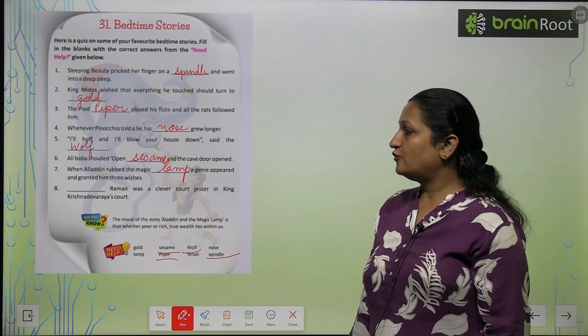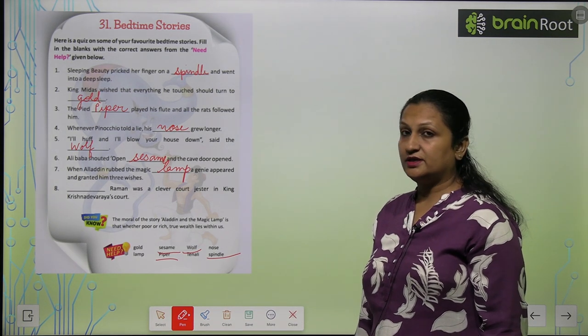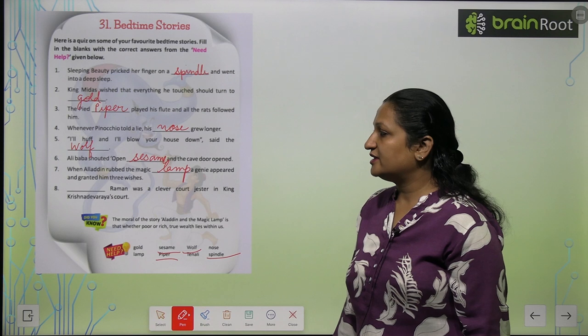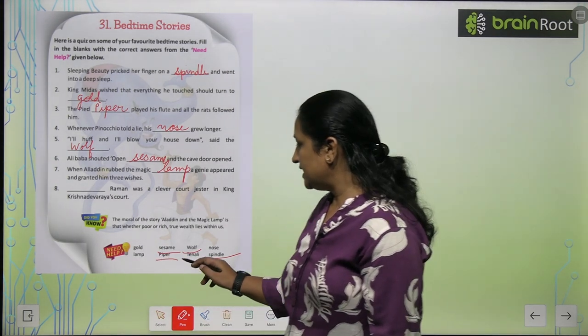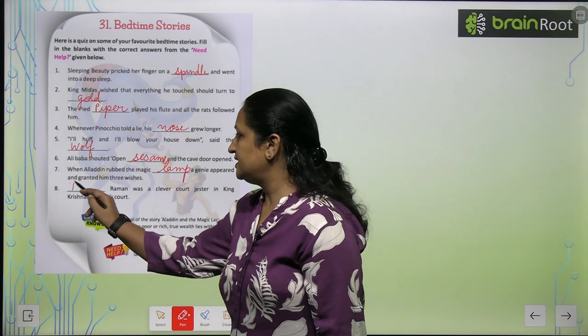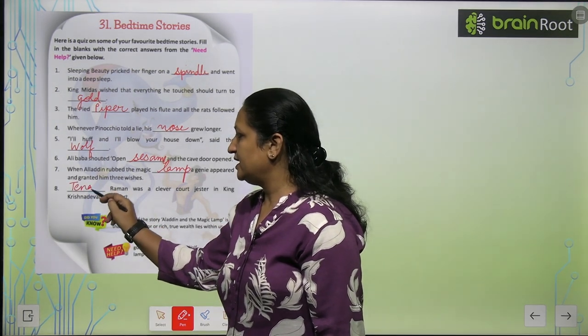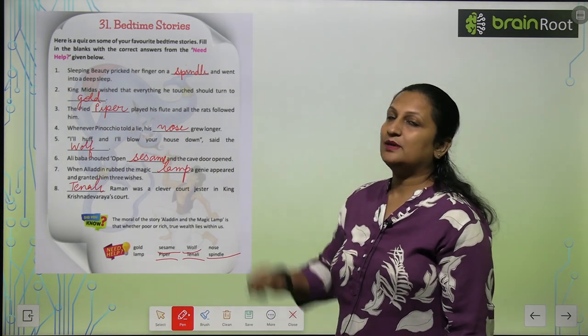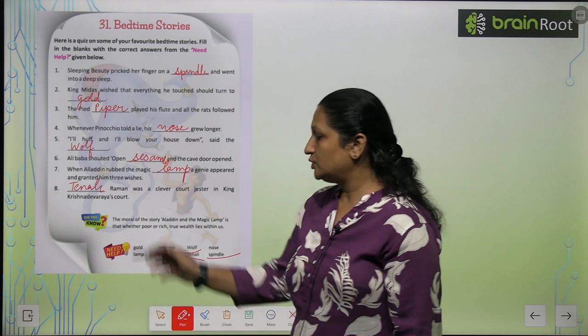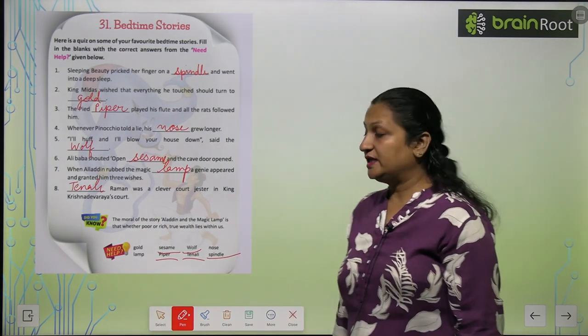Dash Raman was a clever court jester in King Krishnadeva Raja's court. Toh kaun the wo? Wo the Tenali Raman, T-E-N-A-L-I, Tenali Raman. Like this, you are going to complete this page. But first children, do you know the moral of the story?